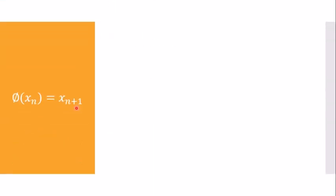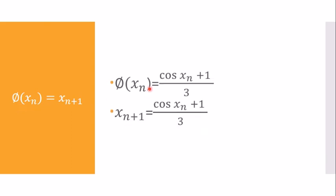Moving to the next step, φ(xₙ) = (cos xₙ + 1)/3. In the iteration method, we equate φ(xₙ) to x_{n+1}, giving us the iteration formula: x_{n+1} = (cos xₙ + 1)/3. We will now use this formula to begin the iteration.